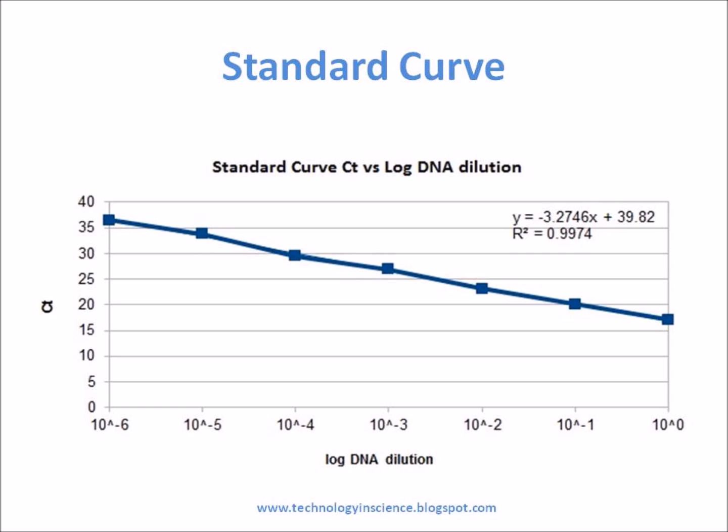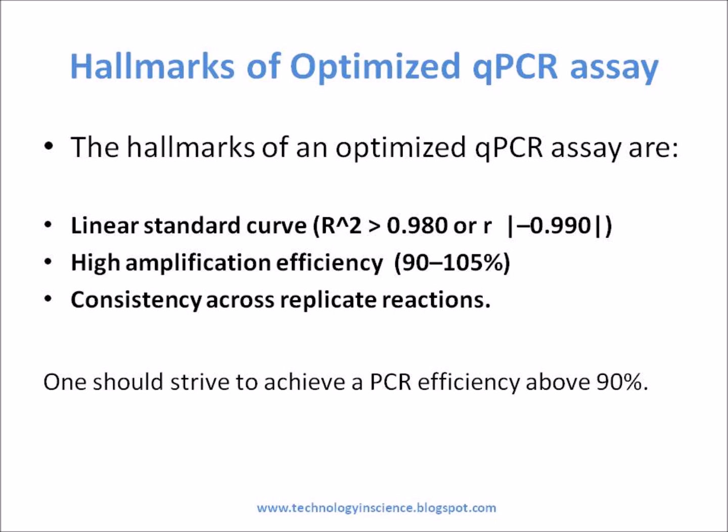The equation of the linear regression line, along with Pearson's correlation coefficient or the coefficient of determination, can then be used to evaluate whether your QPCR assay is optimized. Real-time quantification is based on the relationship between initial template amount and the CT value obtained during amplification. An optimal QPCR assay is absolutely essential for accurate and reproducible quantification of the sample. The hallmarks of an optimized QPCR assay are: linear standard curve, high amplification efficiency, and consistency across replicate reactions. One should strive to achieve a PCR efficiency above 90%.